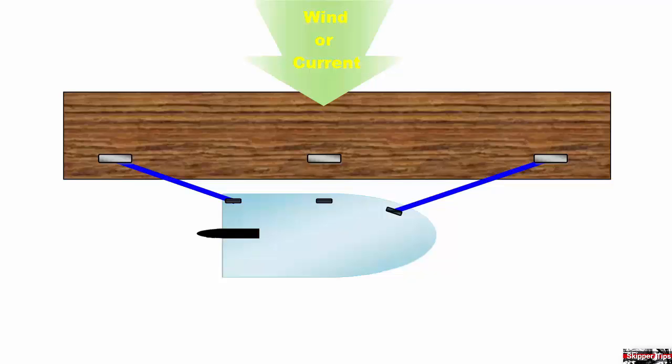You can use a short line called a breast line to help pull the boat in to board or deboard or load provisions. Take a short length of line and attach it to a cleat near the beam. Attach the other end to a pier cleat as shown.